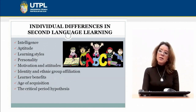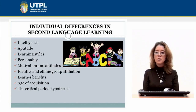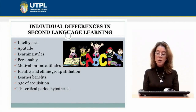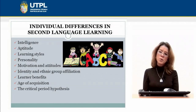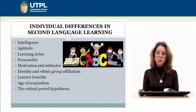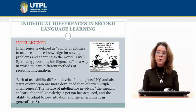So what are the individual differences? We are going to review intelligence, aptitude, learning styles, personality, motivation and attitudes, identity and ethnic group affiliation, learner's beliefs, age of acquisition, and the critical period hypothesis. From these differences, we are going to review the most important — and those which I think you also have some problems with in order to learn a second language.